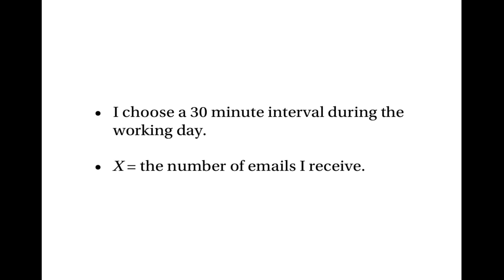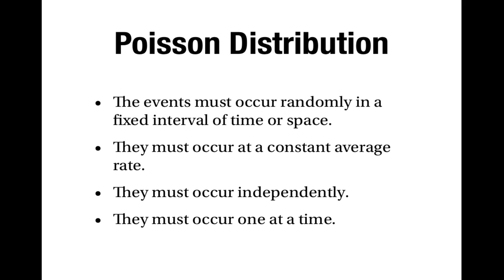My next example is to do with email. Suppose I choose a 30-minute interval during the working day, and x is the number of emails I receive. I think emails do arrive randomly, and I specified a fixed interval of time. Secondly, over a period of half an hour, email probably does arrive at a constant average rate — it's not that emails will arrive more frequently at the start of the half hour and less frequently at the end. The rate at which emails arrive will probably stay constant over a period of half an hour.